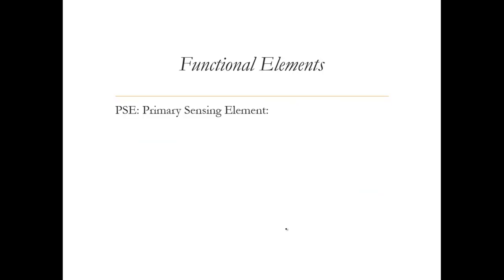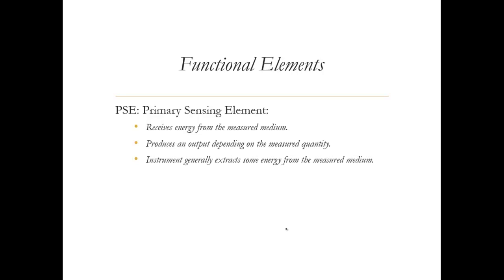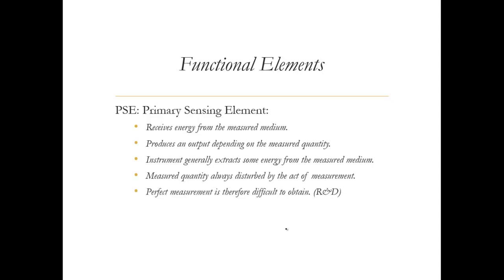The primary sensing element, or sensor, basically receives energy from the measured medium and produces an output depending on the measured quantity. The instrument generally extracts some energy from the measured medium, so the measured quantity is always disturbed by the act of measurement. Therefore, perfect measurement is difficult to obtain.